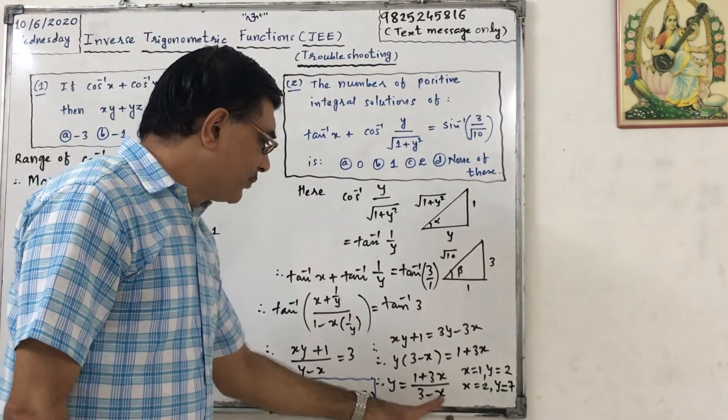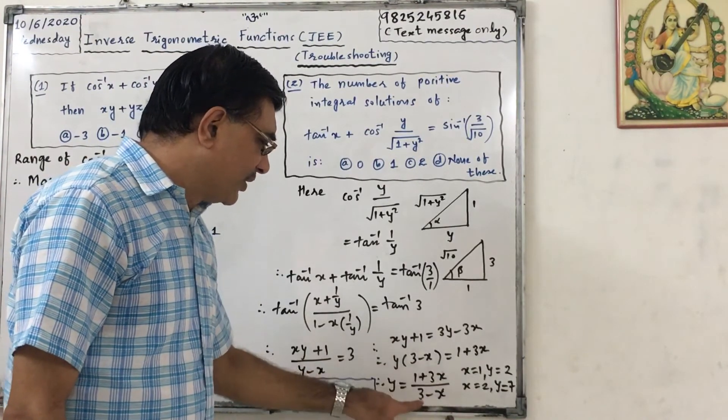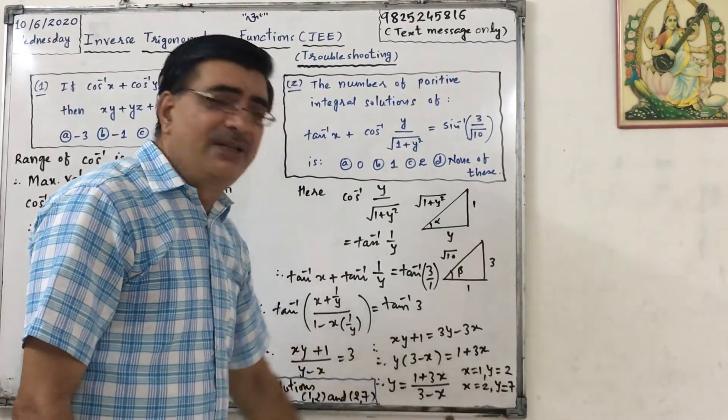Similarly, if I put here 2, okay, then 1 plus 3 into 2, that is 1 plus 6, that is 7, upon 3 minus 2, that is 1. So if x equals to 2, y will be 7.